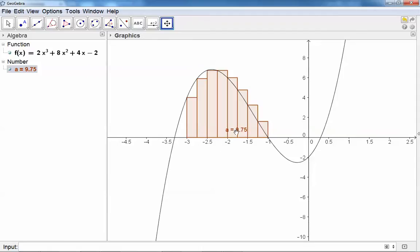And there you can see the total area is 8.975 of these rectangles. You can also determine the upper sum or the lower sum.